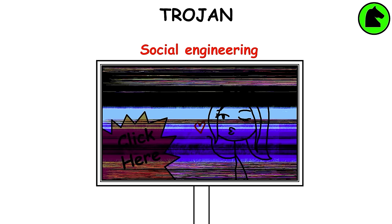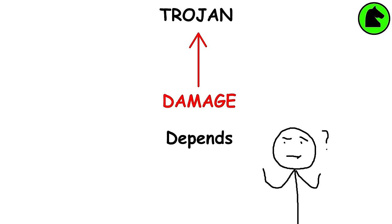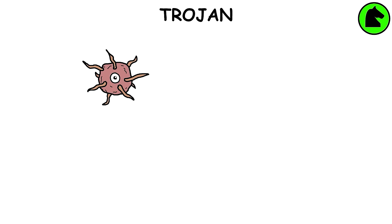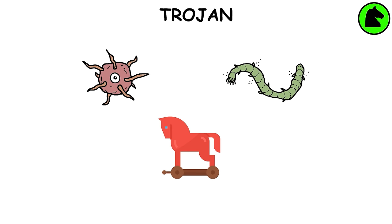The damage done by a Trojan horse depends on the specific malware, as this term only explains how it enters a computer. Unlike computer viruses and worms, Trojans generally do not attempt to inject themselves into other files or otherwise propagate themselves.